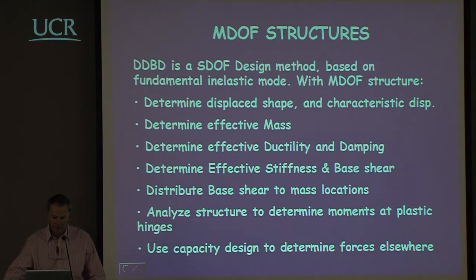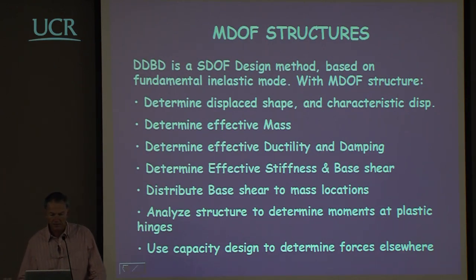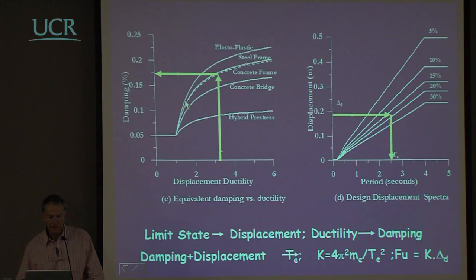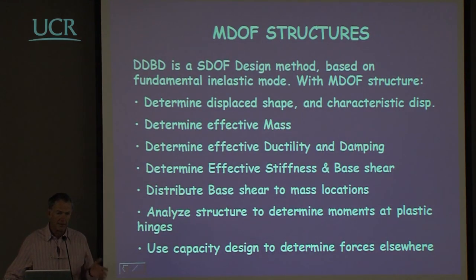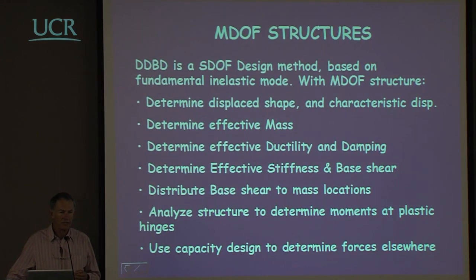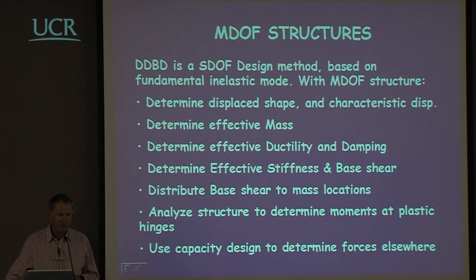How do we go about this procedure when we're talking about multi-degree of freedom systems? The procedure is a single degree of freedom design method based on the fundamental inelastic mode of response. With multi-degree of freedom systems the first aspect is to determine the displaced shape of the structure. From this displaced shape and the distribution of mass we can determine what the characteristic displacement is — a displacement we can use with an equivalent single degree of freedom system. We also need to determine the effective mass associated with the inelastic mode of response.